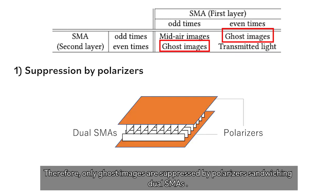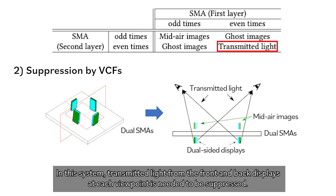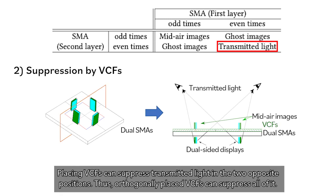Polarizers can selectively suppress odd-reflection light. Therefore, only ghost images are suppressed by polarizers within dual-SMS. In this system, transmitted light from the front and back displays at each viewpoint also needs to be suppressed. Placing BCFs can suppress transmitted light in the two opposite positions, and orthogonally placed BCFs can suppress all of it.